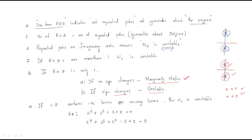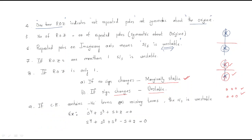Another important point: if the characteristic equation contains negative terms or missing terms, the system is directly unstable. For example, if the equation has a negative coefficient — say s⁴, s³, s², and a negative term — the system is unstable. Also, if the s² term is missing while s⁴, s³, s¹, and s⁰ are present, that is also an unstable system.